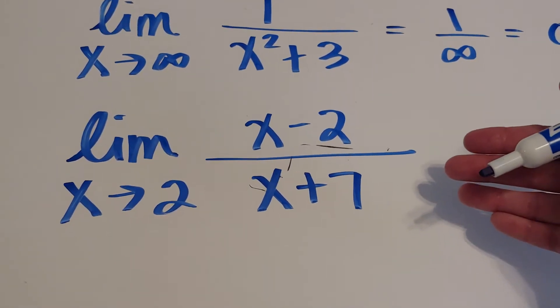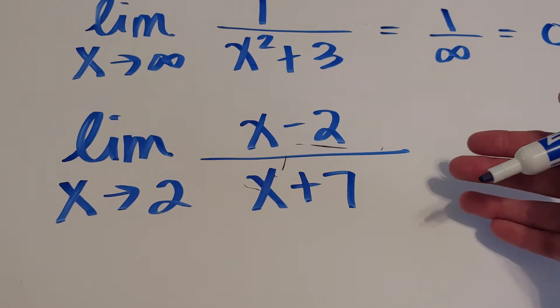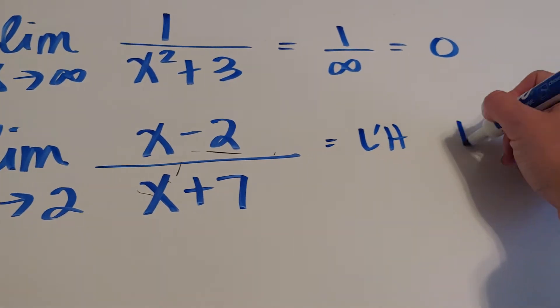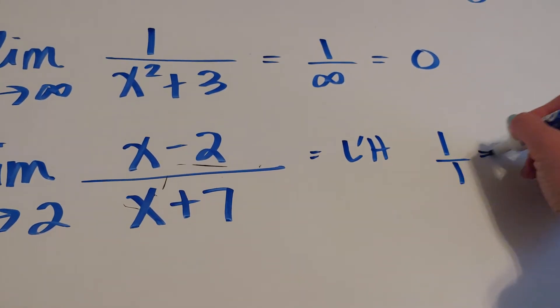So if you use L'Hopital's Rule accidentally here, you would get the derivative of the top is 1. The derivative of the bottom is 1. So you're getting an answer of 1.